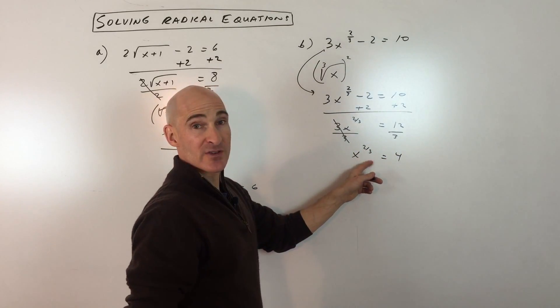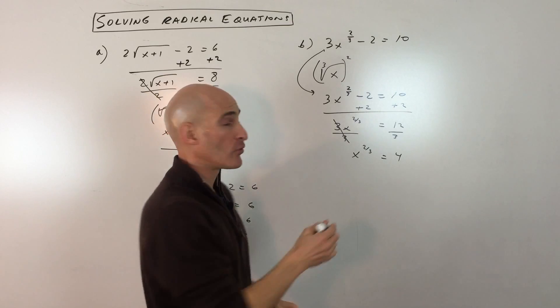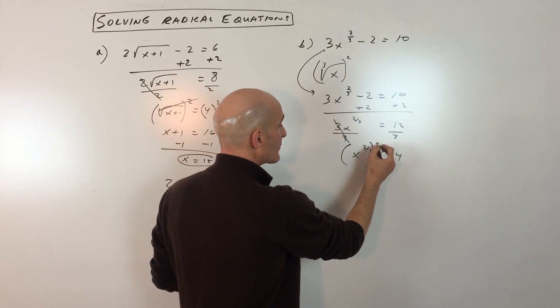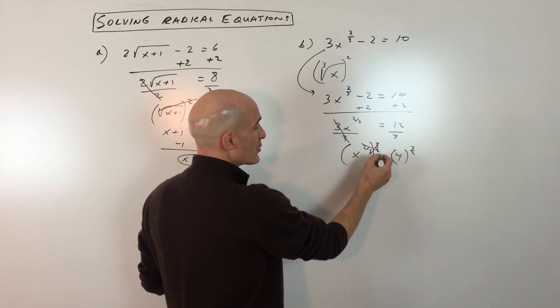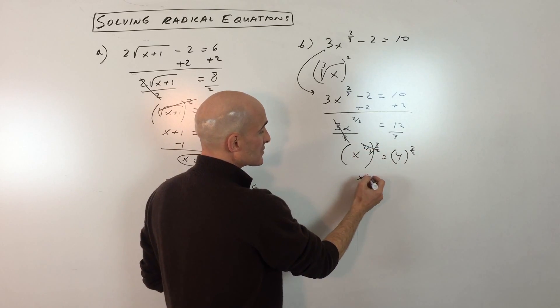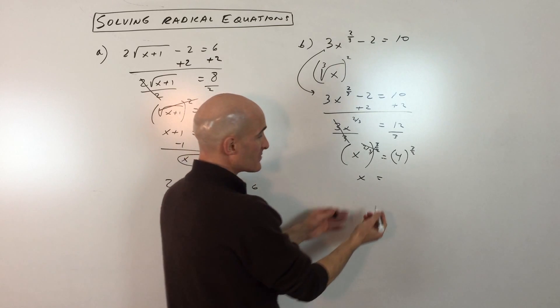And then what I'm going to do now is raise both sides to the reciprocal power. So instead of the 2 thirds power, I'm going to raise it to the 3 halves power. And you can see when you have a power to power, you multiply. So this is just going to give you x to the first, which is what we wanted, just x by itself.